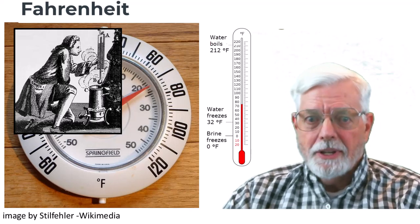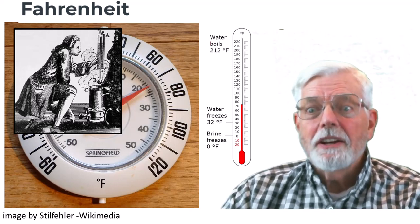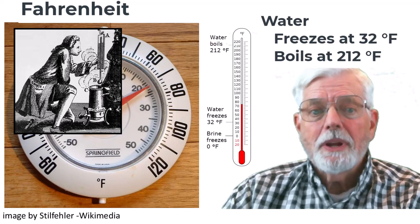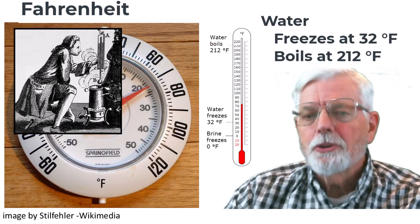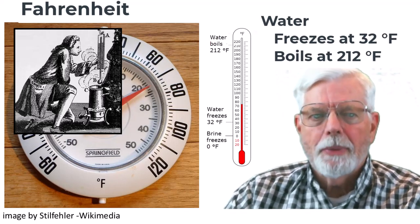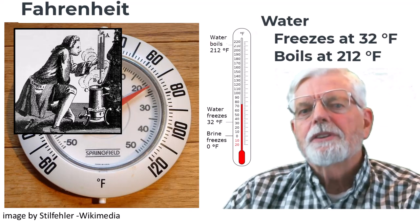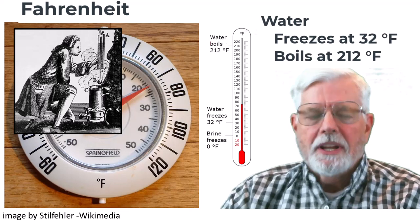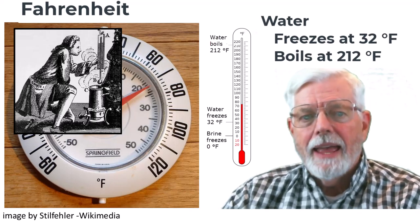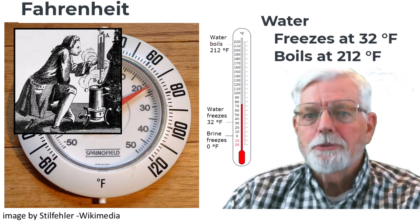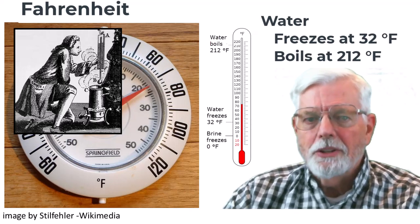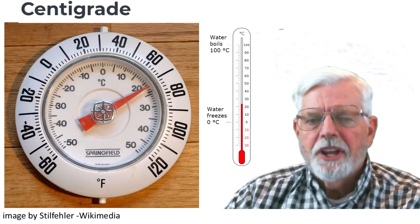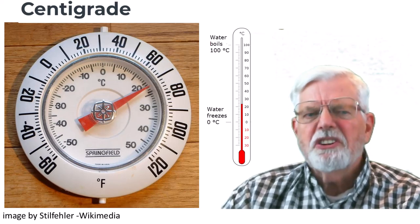It has been reported that Daniel Gabriel Fahrenheit decided that zero degrees Fahrenheit would be defined as the temperature where a solution of salted brine water became frozen. After some measurements of where water boiled, he set that temperature on his scale to 180 degrees past freezing, which became 212 degrees Fahrenheit.